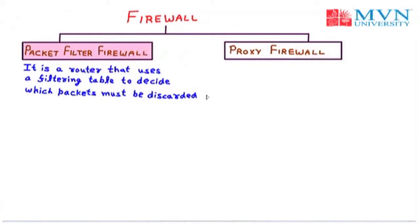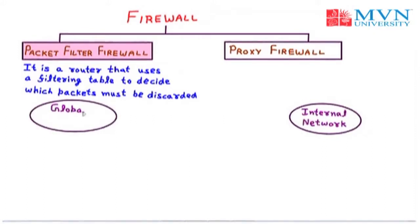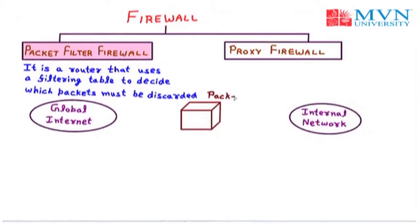Source and destination IP addresses, source and destination port addresses, and types of protocol may be used to forward or discard packets with the help of this packet filtering firewall. To understand the packet filtering firewall, let us take the example in which we are having global internet and the internal network separated by a packet filtering firewall. The packet filtering firewall will maintain a table which will contain interface, source IP, source port, destination IP, and destination port.